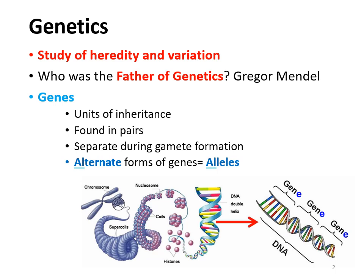Make sure you write down the definition: a gene is the unit of inheritance — what gets passed on to offspring. Each of the genes of DNA is found in different pairs because you are inheriting from two parents. These pairs then separate during gamete formation — circle the term gamete. Your gametes are your sex cells, either a sperm or an egg cell. When you produce sperm or an egg cell to pass on to your offspring, your offspring are getting one copy of each of your genes, and a second copy from their other parent.